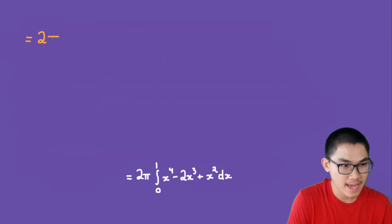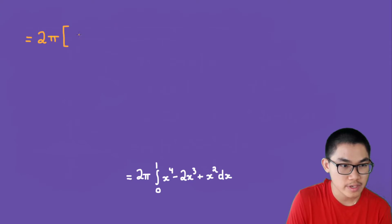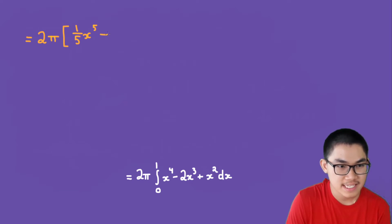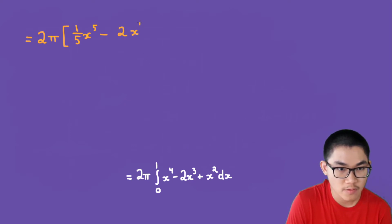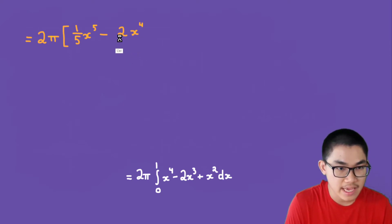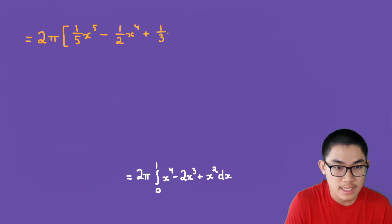This is equal to 2π times the antiderivative: for x to the power of 4 we get x to the power of 5 over 5; minus the antiderivative of 2x cubed, which gives 2 times x to the power of 4 over 4, simplifying to one half x to the power of 4; and the antiderivative of x squared is one third x cubed. The limit goes from 0 to 1.